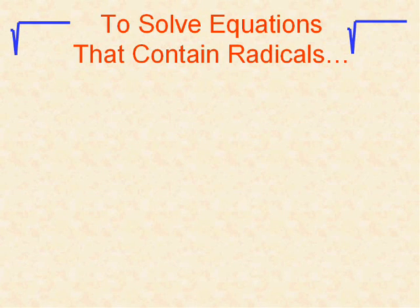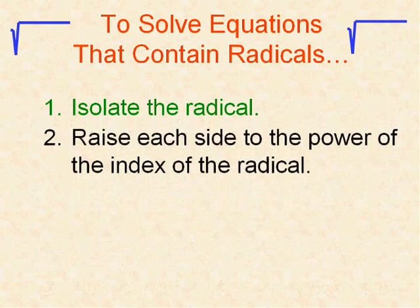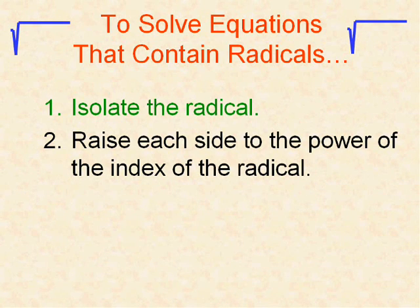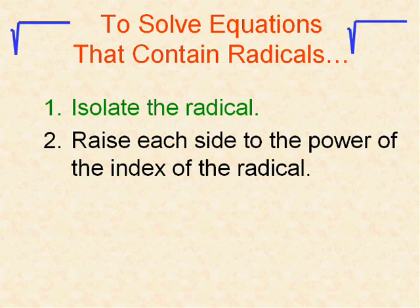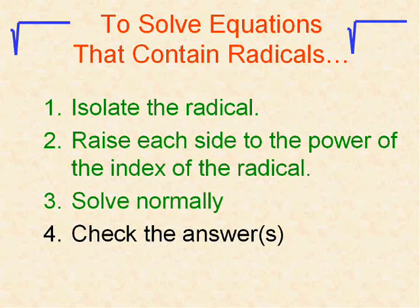So we use this to solve equations that contain radicals. What we'll do is isolate the radical — get it by itself — then raise each side of the equation to the power of the index of the radical. The index is the little number at the top left of the radical. In a square root it's inferred to be 2; in a cube root it's 3; in a fourth root it's 4, etc. Then we just solve normally. It's going to be critical that you check the answers, because some of them, even though they look right, are not going to work.